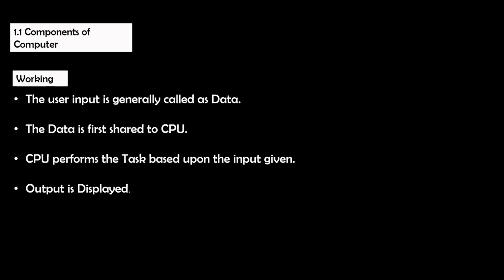Hence, in the final step, output is displayed on the monitor — for example, 2 plus 2 equals 4. In this equation, 2 plus 2 is the input given by the user, whereas 4, which is displayed on the monitor, is called the output.